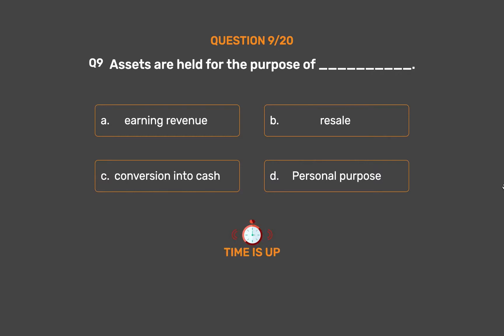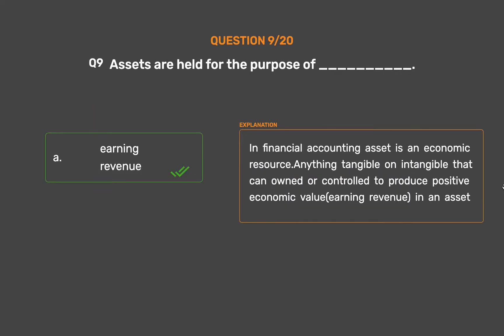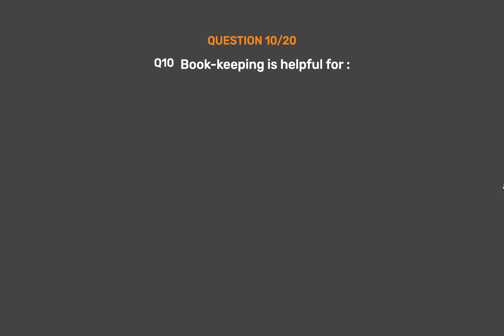The correct answer is option A: earning revenue. In financial accounting, an asset is an economic resource — anything tangible or intangible that can be owned or controlled to produce positive economic value. Earning revenue is the purpose of an asset.